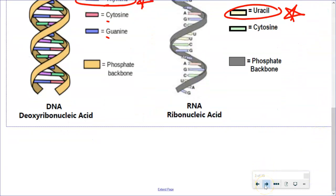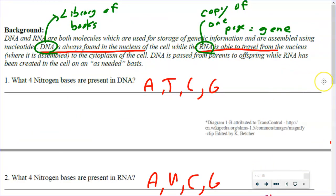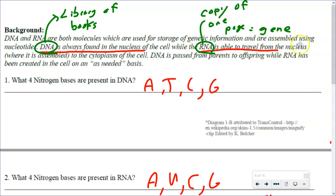At this point in class, students looked at the picture and we also watched a video clip, answered some questions, and I'm just going to go through the answers so you can fill them in. There's a background piece: DNA and RNA are both molecules which are used for storage of genetic information and are assembled using nucleotides — remember, nucleotides are our A's, T's, C's, and G's.